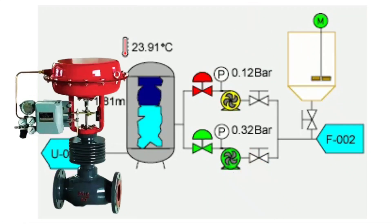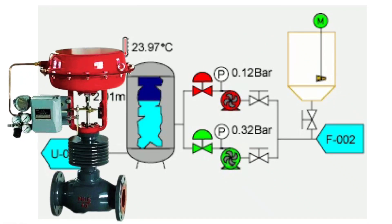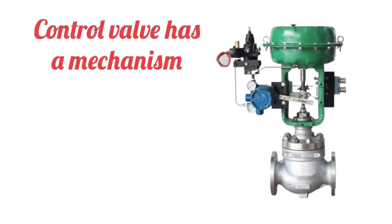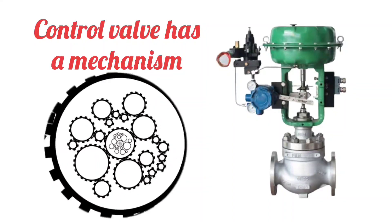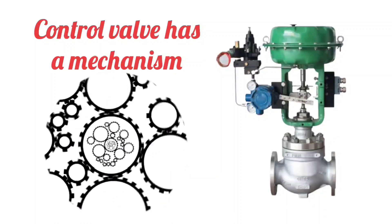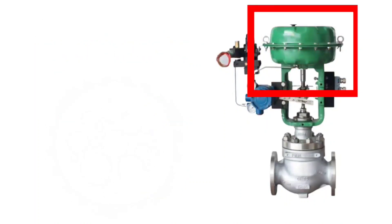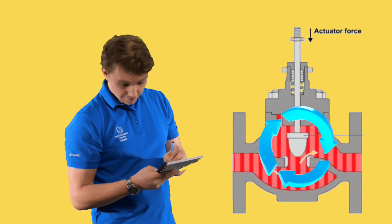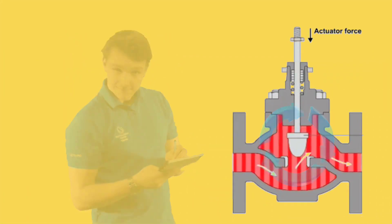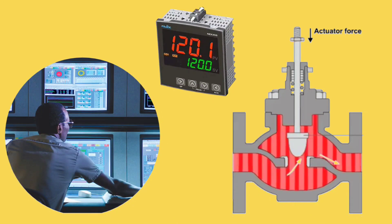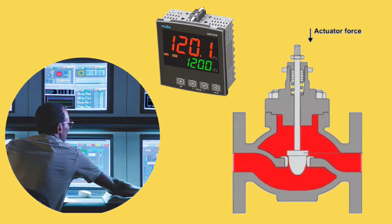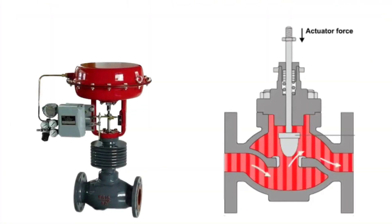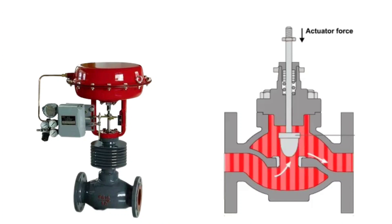And with the help of control valves, the values of these parameters can be reduced or increased. In control valves, there is a mechanism — the upper part of the control valve, which is called the control valve actuator. It adjusts the position of the plug or disc according to the signal received from the controller, and controls the flow of fluid. Control valves are used where precise control is necessary.